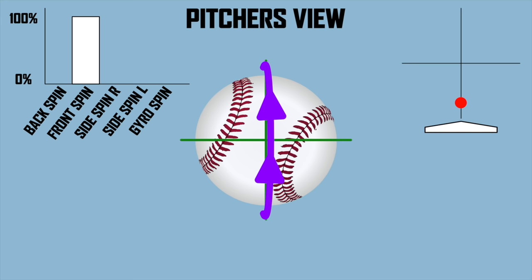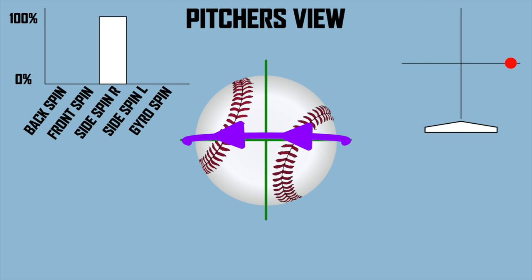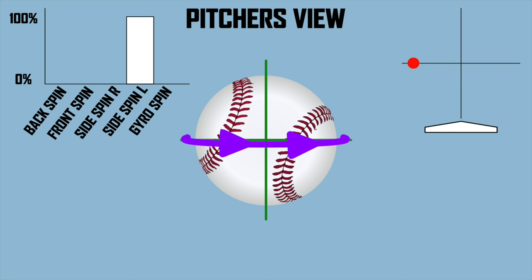If the ball is spinning dead to the side, you can see the dot move to the right. The back of the ball is spinning towards the left, which means the front of the ball is spinning towards the right - giving you 100% side spin towards the right and the ball moves to the right. If the ball has 100% backspin, you get 100% movement upwards, fighting gravity. And if the ball is spinning 100% towards the left, all movement will be in that direction.